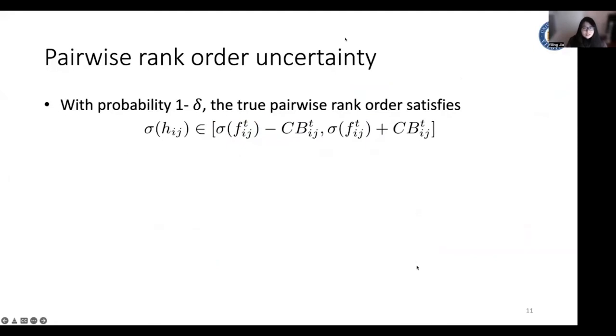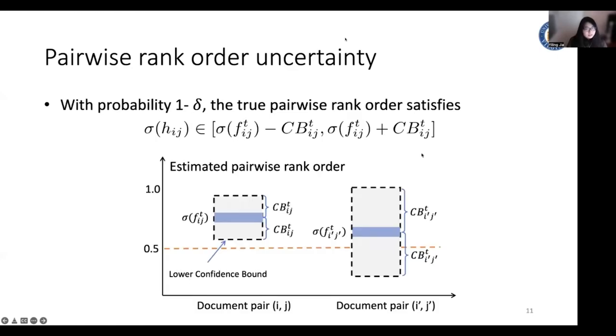With the constructed uncertainty with high probability, the true pairwise rank order satisfies this. So the left side is the lower confidence bound of our estimation, and the right side is the upper confidence bound of our estimation. Now we can separate the documented pairs into two sets, the certain rank order and uncertain rank order.